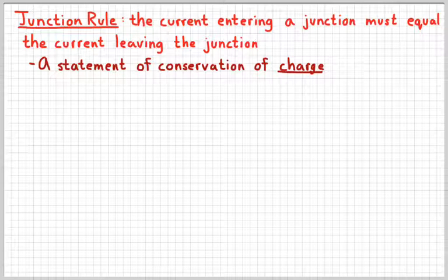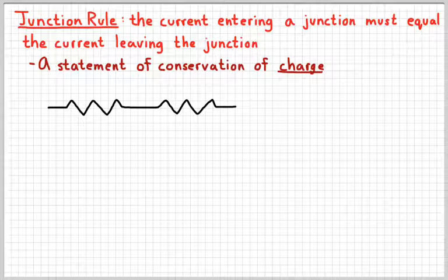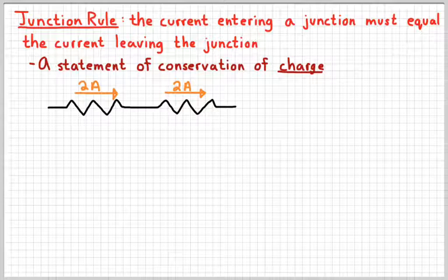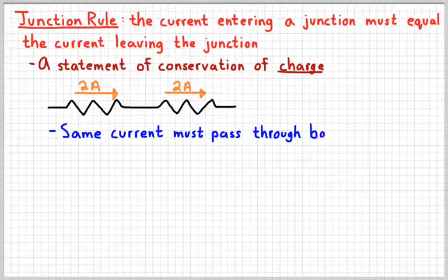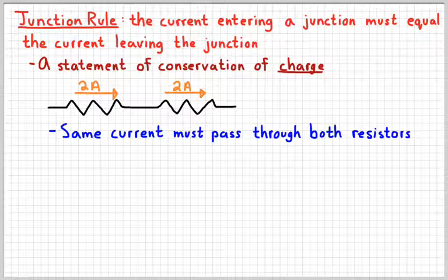If some charges go in one point, it should stand to reason that they should go out the same point, and that the same amount of charges that went in should equal the amount that go out. It would be kind of like pouring water down a pipe only to have some disappear if this law wasn't true. So consider two resistors in series — they have to have the same current because there's no junction for the current to leave.